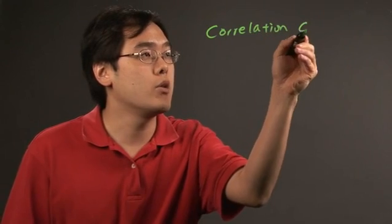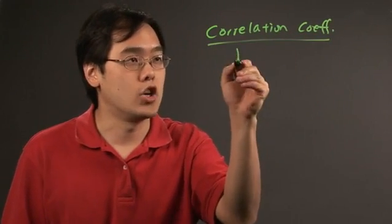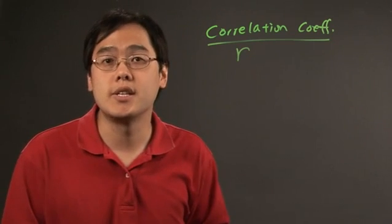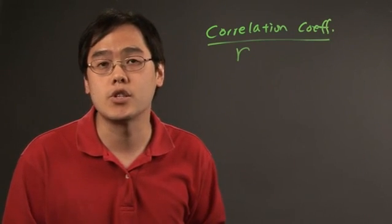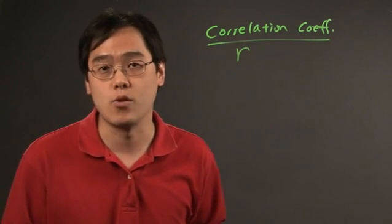The correlation coefficient is denoted by the letter r. As you might imagine in statistics, the correlation coefficient determines the strength and direction between two variables, generally x and y.